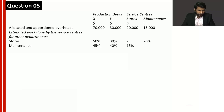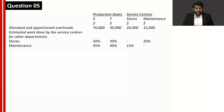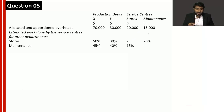In this question, allocated and apportioned overhead has been given for four departments. Allocation and apportionment are already done, meaning the first two steps are completed. Some service centers are present, and step three requires making the service center cost zero. The next step is reapportionment.